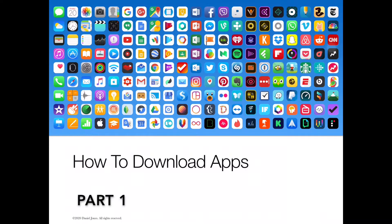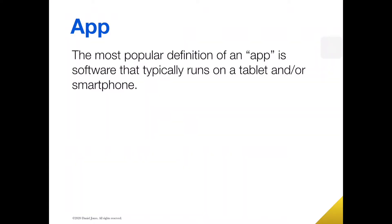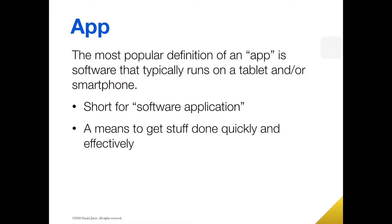Today we're going to talk about how to download apps. But before I get into the step-by-step process, I want to talk about what an app is and define that. An app is software — the term app is just short for software application. Apps are typically run on a tablet device or a smartphone, and they're a way of getting things done quickly, effectively, and very inexpensively.